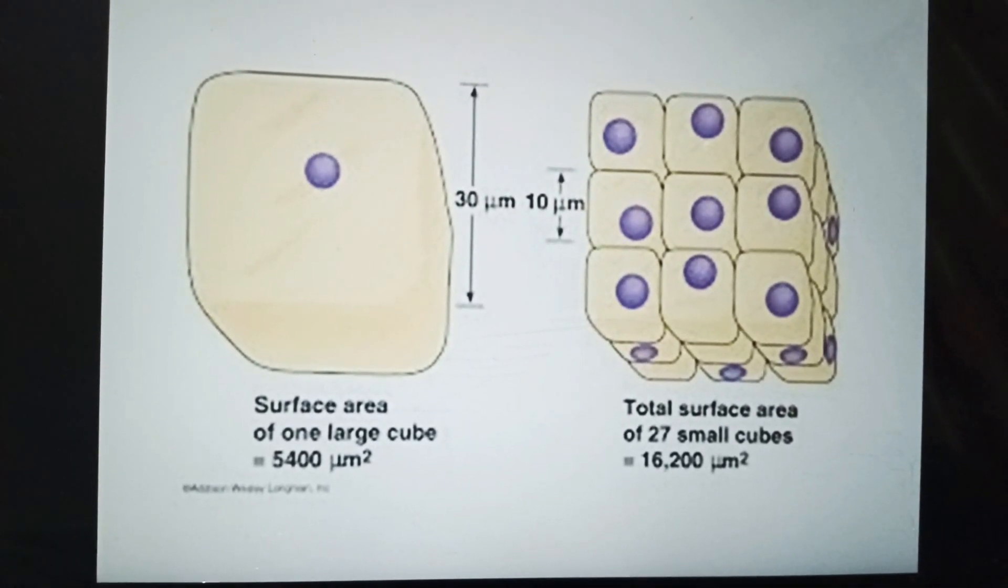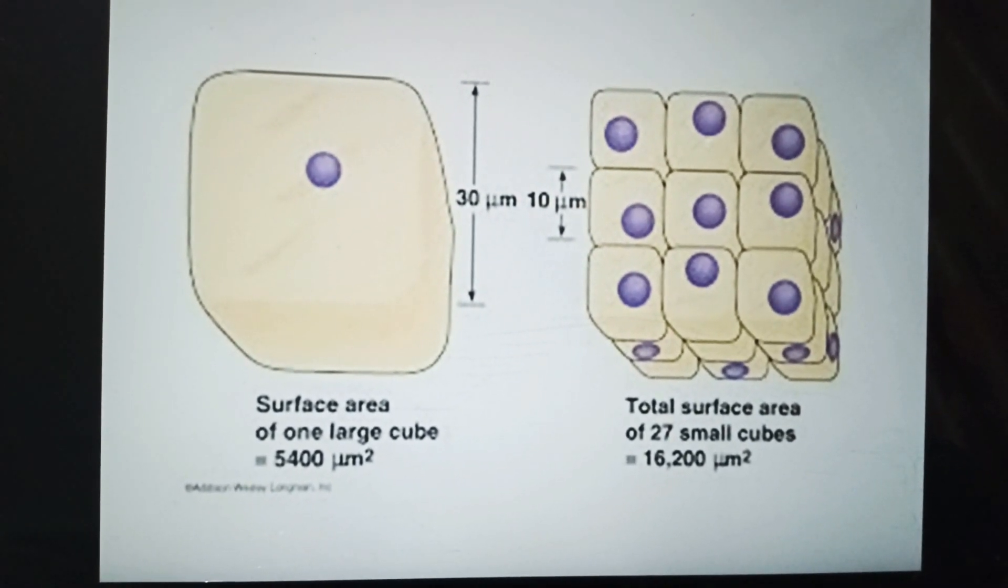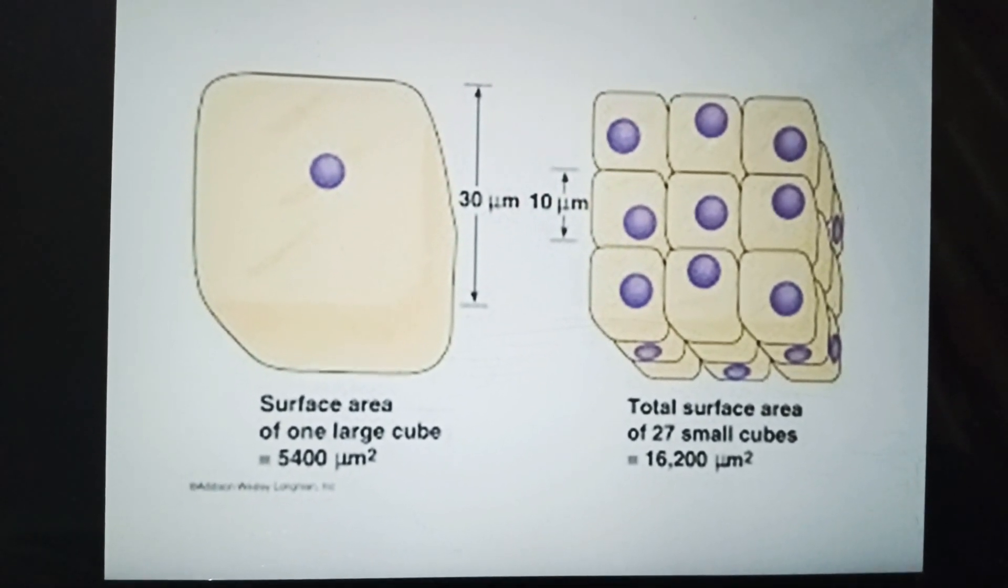And total surface area of 27 small cubes would be 16,200 micrometers squared.